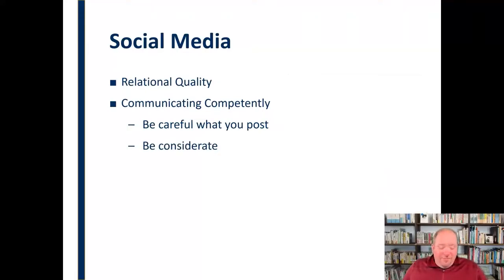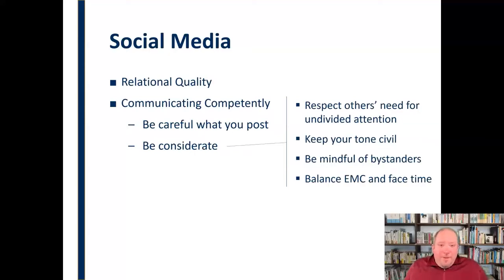We also want to be considerate of others. We need to think about others because this is public information to some degree, theoretically. Social media, even if you have it restricted to your friends or just particular people, it's still a public venue enough to involve a lot of other people. So we need to be considerate. And by that, we mean we need to respect others' need for undivided attention. So even if we're offline and we're talking to somebody, we need to be considered of being focused on them and not on our phone, working on social media or hanging out in social media. We need to keep our tone civil in social media. It's not an excuse to start lashing out at people just because we're not physically present with them. Be mindful of bystanders, both paying attention to people when they're around you in a physical sense, but also be mindful of bystanders who get caught in the crossfire of this whole social media thing. People get drawn into these things in between the social connections. So we need to be mindful of them. And then we need to also consider that relational quality. Balance our EMC and our face time with people. Don't get so caught up in social media that we do so to the exclusion of these face-to-face relationships.